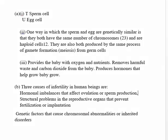To summarize the solutions: for A1, T is the sperm cell and U is the egg cell. For A2, the sperm and egg are genetically similar because they both have the same number of chromosomes — 23 — and are haploid cells, and they are both produced by the same process of gamete formation from germ cells. For A3, the placenta provides oxygen and nutrients, removes waste and carbon dioxide, and produces hormones. For question B, the three causes of infertility are hormonal imbalances, structural problems, and genetic factors. Please subscribe and hit the like button for more videos.